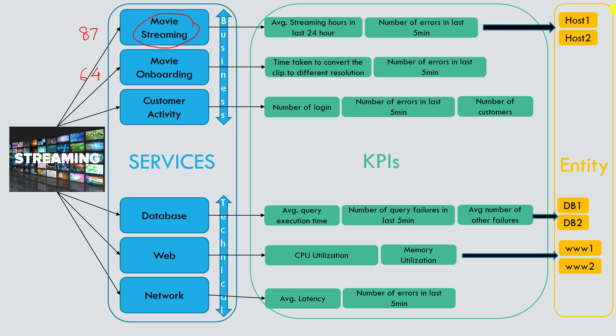So these are the key concepts of services, KPIs, and entities — and they are very much interrelated. When designing services and KPIs, you need to understand what business process you want to monitor and how you want to monitor it. Those two questions will basically give you the answer of how many services and KPIs you need to create in ITSI.